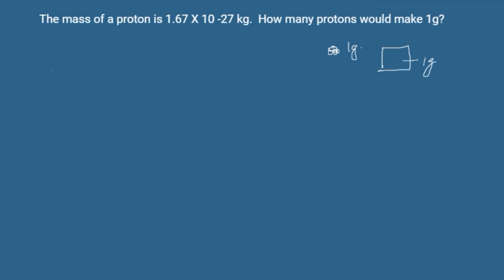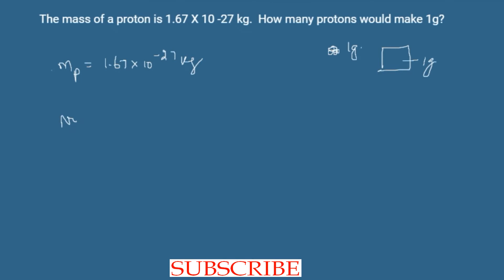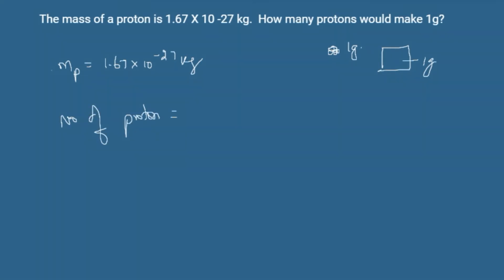In order to find this, first I am writing mass of proton equal to 1.67 into 10 power minus 27 kilogram. And then, number of protons is equal to total mass divided by mass of each proton.